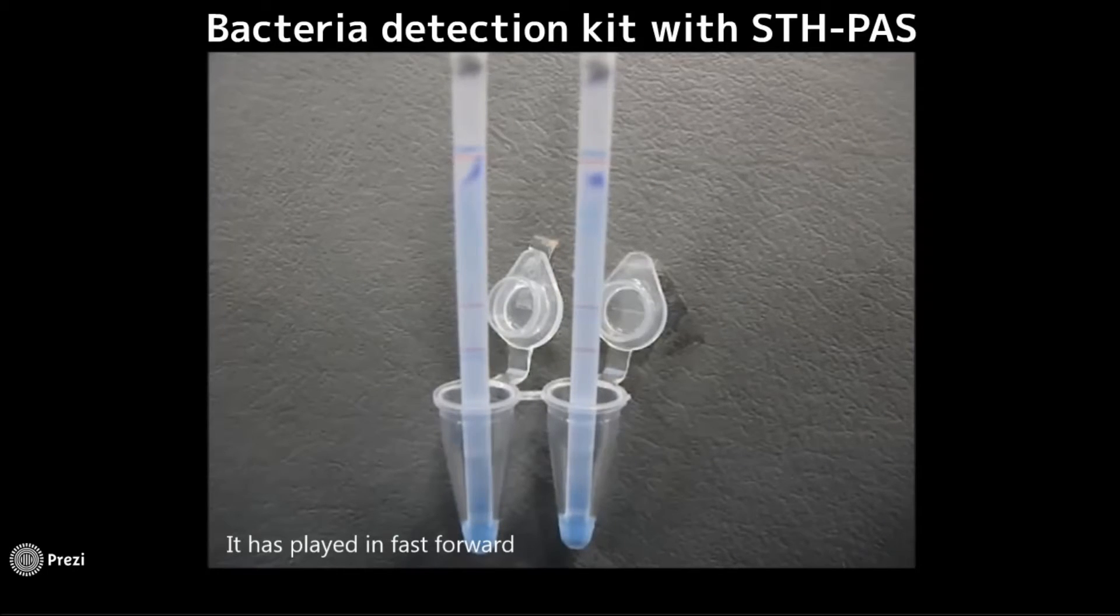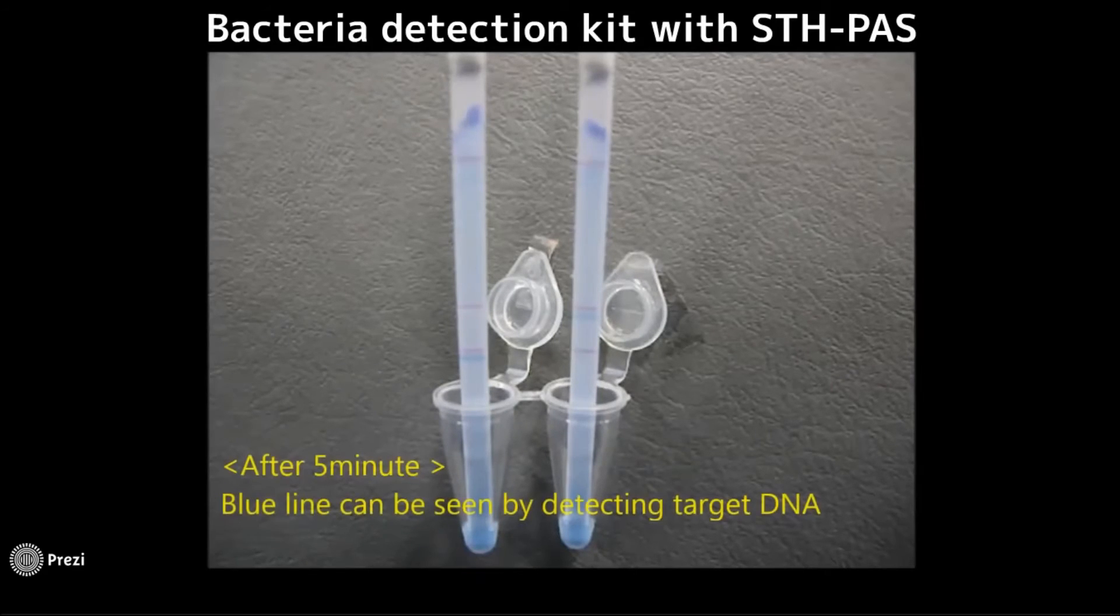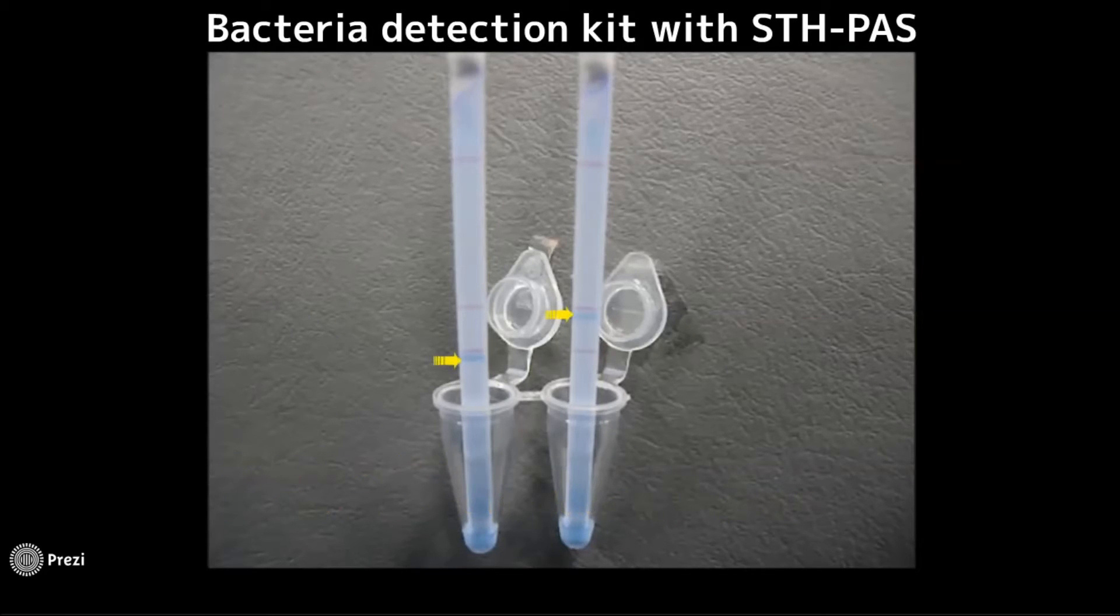STH Pass can detect five items at once, including internal control. After five minutes, the beginning of the color development process can be confirmed, and you can make a visual inspection ten minutes later.